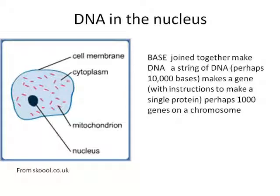Starting point. Here's a cell. In the nucleus is the DNA. The DNA is made up of bases. A base will join to another base, join together, and that will make a string of DNA. Perhaps 10,000 bases, maybe more, 20,000 sometimes, 30,000, makes a single gene. That means all the instructions for making a single protein. Then there's going to be 10,000 genes, perhaps, on a chromosome. So we're talking about very long molecules, all curled up inside the DNA.